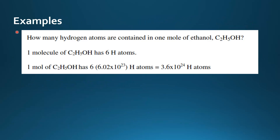Let's try some examples. How many hydrogen atoms are contained in one mole of ethanol? Most students will look at the formula for ethanol and count up the number of hydrogen atoms — there are 5 here and 1 here — and write the answer down as 6. The mistake they're making is they're not thinking of how many particles there are in a mole.